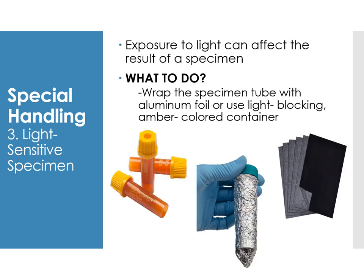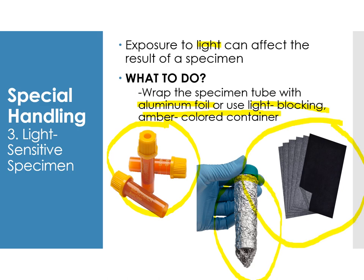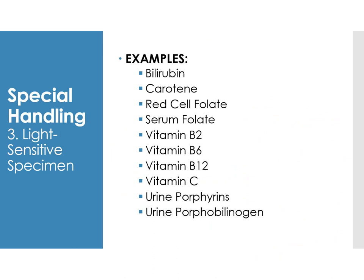Exposure to light can affect the result of a specimen. The specimen must be wrapped in aluminum foil or placed in a light-blocking amber-colored container. In the Philippines during internship, carbon paper was commonly used to cover the tubes. Tests requiring light protection include bilirubin, carotene, red cell folate, serum folate, vitamin B2, B6, B12, vitamin C, urine porphyrins, and urine porphobilinogen. The most common is bilirubin, typically tested in newborns.